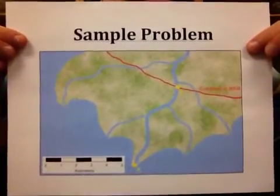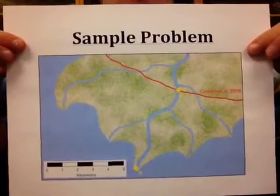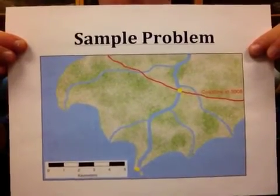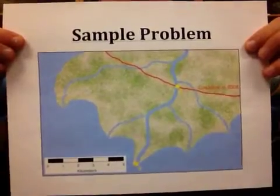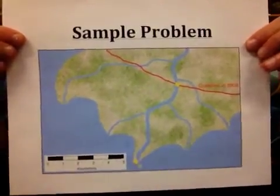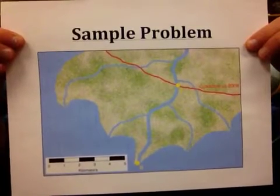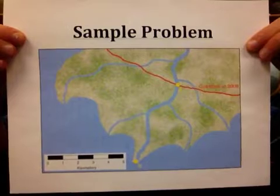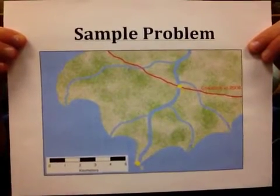We're going to do a sample problem that is very similar to what you would see in an intro geology lab where we have a delta that a river is providing sediment to. We can see the red line is the coastline in the year 2008 and the map was made in the year 2013.